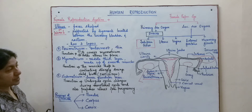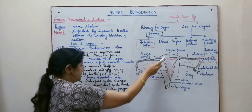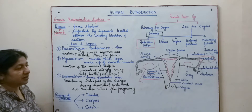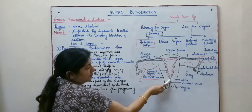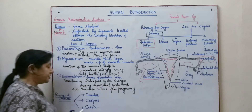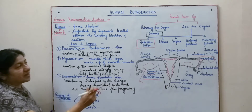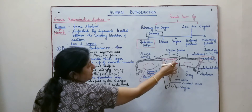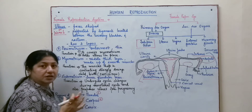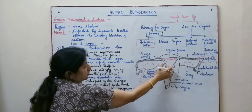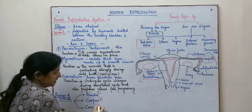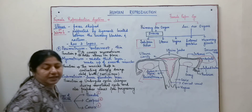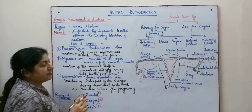The uterus has three different regions: the uterine fundus, the corpus (which is the central region or uterine cavity), and the cervix. The cervical canal is associated with the cervix. The fundus is the upper, thick, and muscular part. The corpus is the uterine cavity where implantation occurs and the baby develops. The cervix is a narrow opening that leads through the cervical canal.